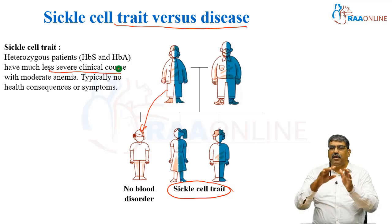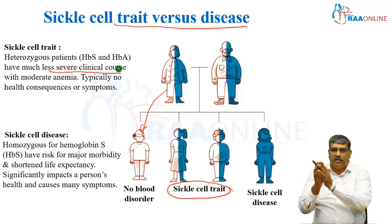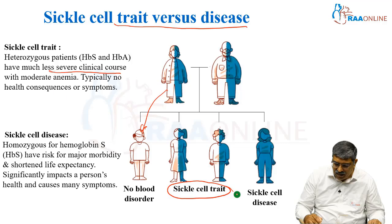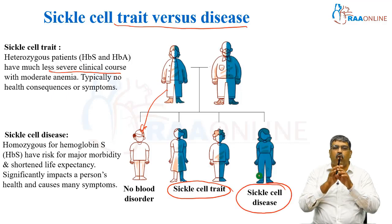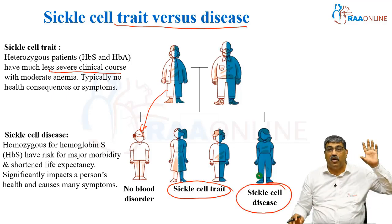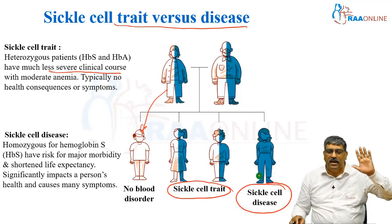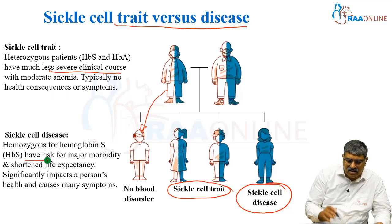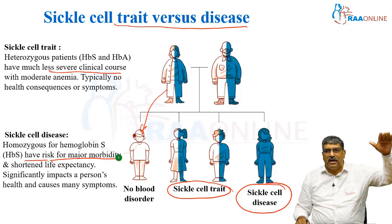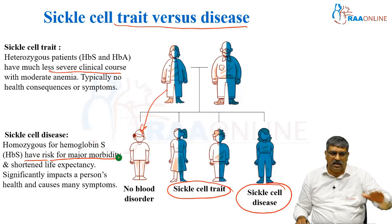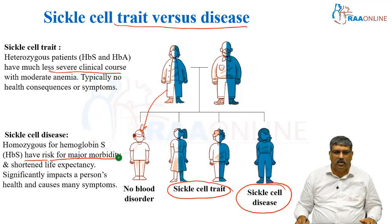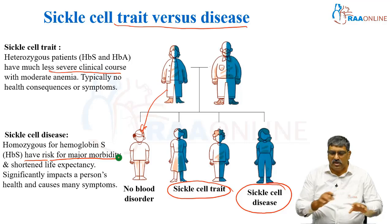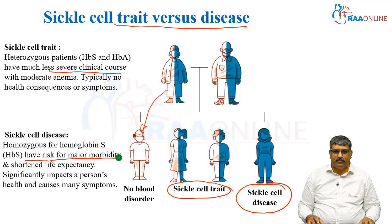But if you receive hemoglobin S from both parents, you become sickle cell disease. Here the patient is homozygous for hemoglobin S alone, and you have a very high risk for morbidity and your life expectancy comes down. This impacts patient health and causes many symptoms.